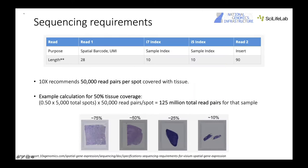Regarding sequencing requirements: Read 1 consists of the spatial barcode and UMI (28 bases), we use dual index (10 bases each), and Read 2 consists of 90 bases. 10x recommends 50,000 read pairs per spot covered with tissue. Depending on the size of your tissue, we calculate how much to sequence — the bigger the tissue, the more sequencing required.